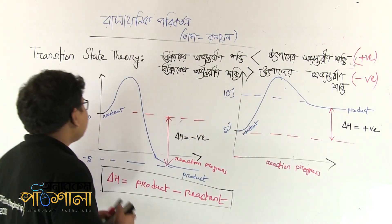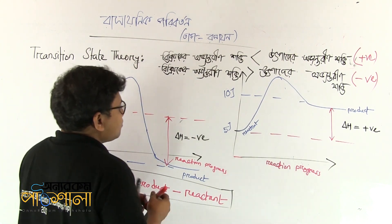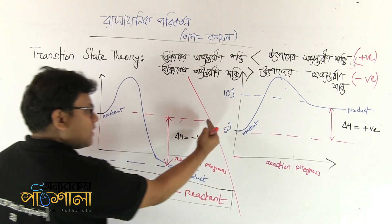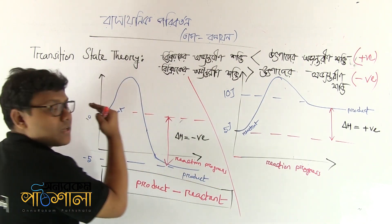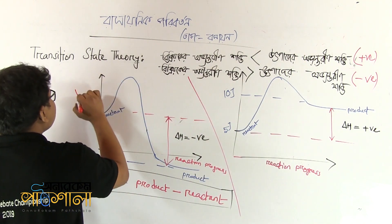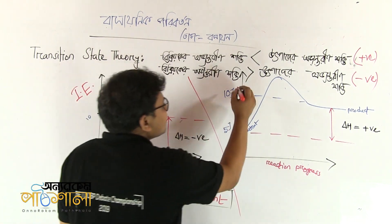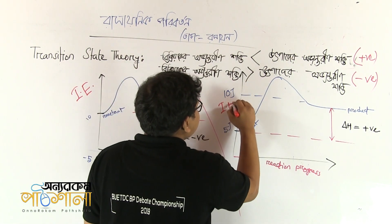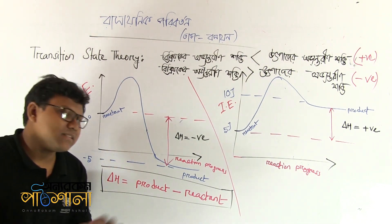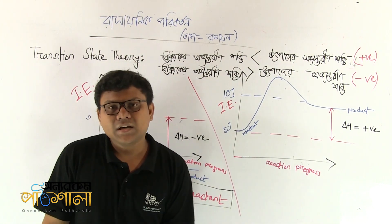Let's see this x-axis. We have two graphs. This graph is the internal graph — in fact, the graph is called internal energy. What is internal energy? We have one example. The first axis is the x-axis, written as reaction progress.